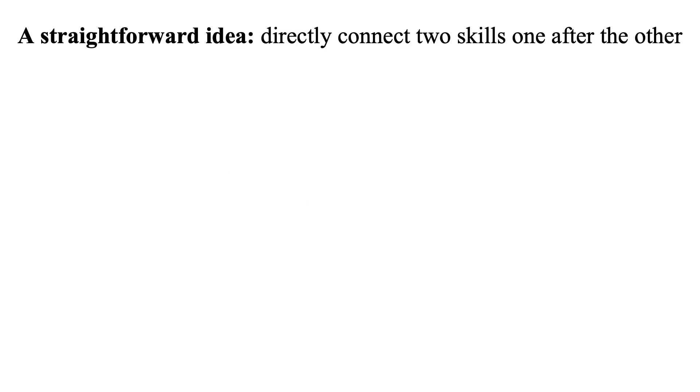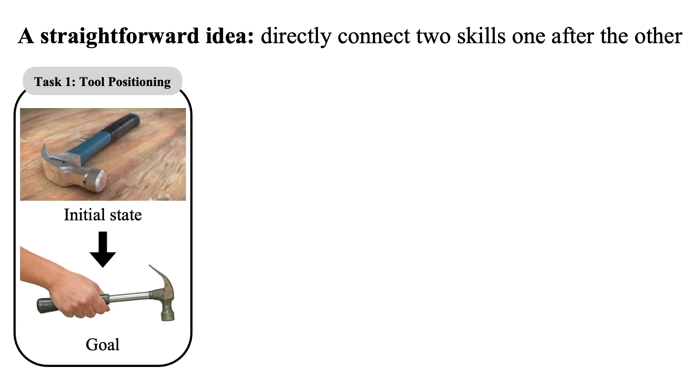One straightforward idea is to directly connect two separate skills one after the other. To verify this idea, we design a tool positioning task, where the robot is asked to first pick up a hammer from the table, then in-hand rotate the hammer to a ready-to-use pose.